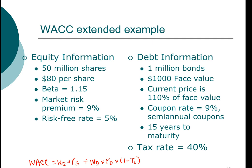Let's start the calculation with the cost of equity. Let's take a look at what information we are given to determine the most appropriate model to use. We see that we have the systematic risk of the firm, the market risk premium, and the risk-free rate. This tells me that the Capital Asset Pricing Model is the most appropriate model to apply in this situation.